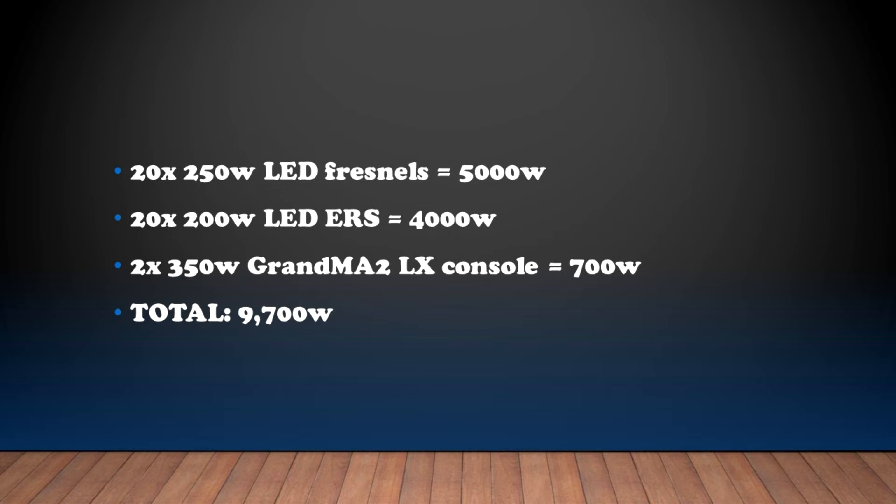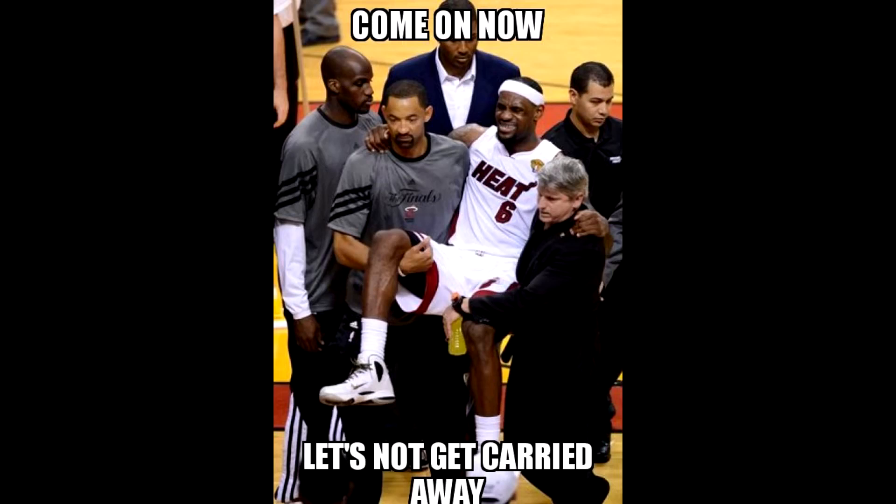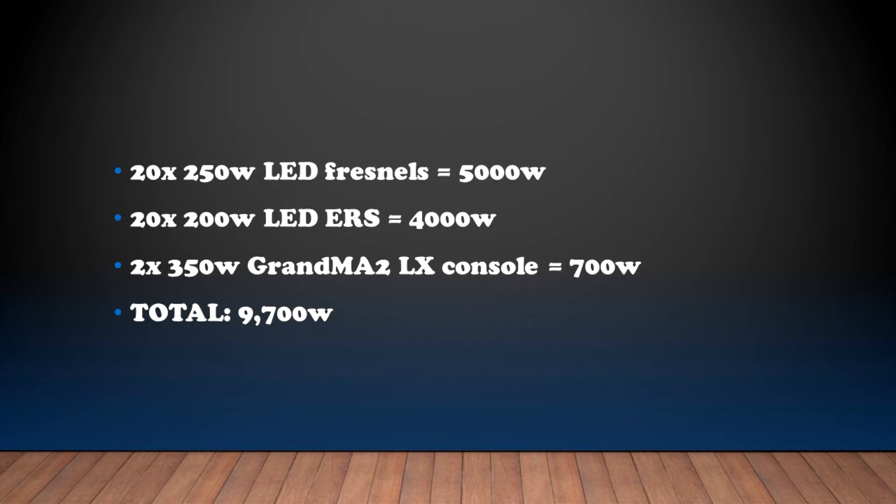Here we have 20, 250 watts LED Fresnels, not the incandescent ones. Let's not get carried away here. Equals 5,000 watts. 20, 200 watts LED ERS equals 4,000 watts. And then we have two 350 watts GrandMA2 lighting console, which is then going to equal to 700 watts. Having a total of 9,700 watts.